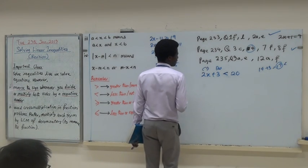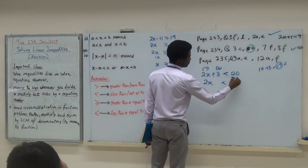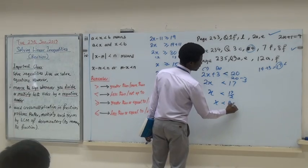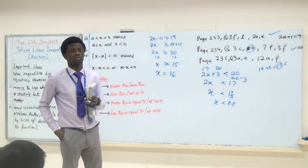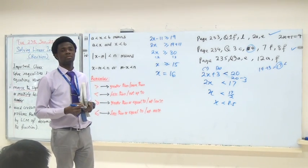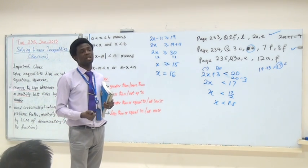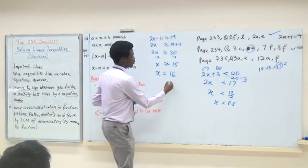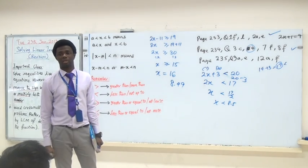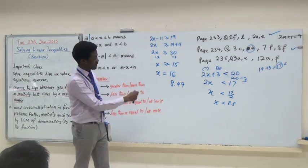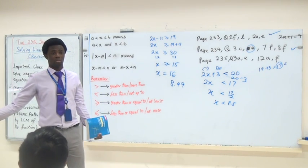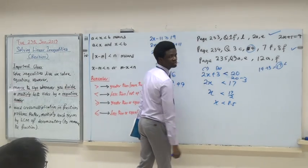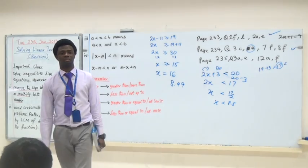So you solve this: 2X less than 20 minus 3, giving 2X less than 17, so X is less than 17 divided by 2, which is X less than 8.5. The answer is: a CD costs less than $8.50. A CD could be $8.49 — as long as it's less than 8.5. Because if it's $8.49, I have like 2 cents to take home. Just don't put a specific value like X equals 8-something.